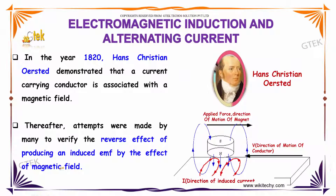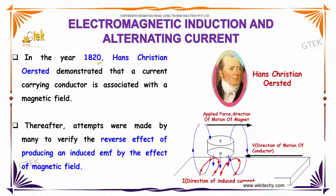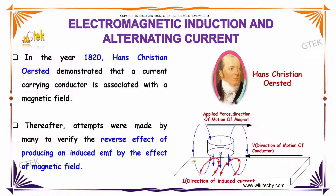Before talking about electromagnetic induction, we need to talk about the history. The great physicist and scientist Mr. Hans Christian Oersted, in the year 1820, demonstrated that a current-carrying conductor is associated with a magnetic field. Therefore, attempts were made by many to verify the reverse effect of producing an induced EMF by the effect of a magnetic field.